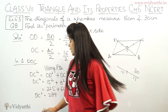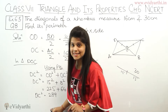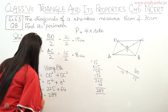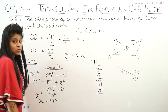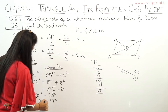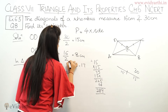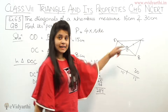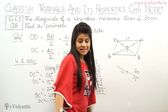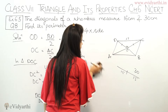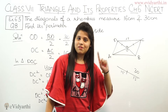Now, 289 is 17 squared. So DC squared equals 17 squared, and the squares cancel — DC equals 17 cm. DC is one side of the rhombus. Since all sides of a rhombus are equal, all sides are 17 cm.